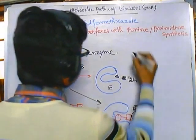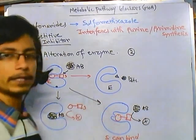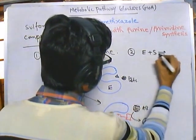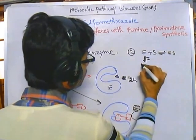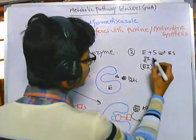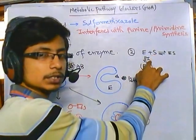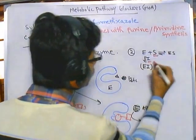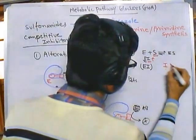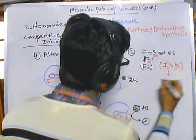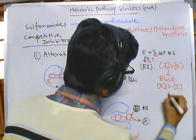The second approach involves competitive inhibition. In competitive inhibition, the enzyme can form either an enzyme-substrate complex or an enzyme-inhibitor complex. There is a race between substrate concentration and inhibitor concentration, because both the substrate and the inhibitor compete for binding with the enzyme. If the inhibitor concentration is higher than the substrate concentration, the enzyme will be blocked.